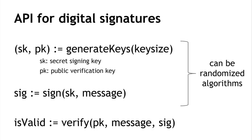Here's an API for digital signatures with three operations. First, generate keys: given a key size, produce a secret signing key SK and a public verification key PK — SK is kept secret for making signatures, PK is given to everyone for verification. Second, sign: given SK and a message, return a signature (a string of bits). Third, verify: given PK, a message, and a supposed signature, return true or false. Generate keys and sign can be randomized algorithms; verify is deterministic.